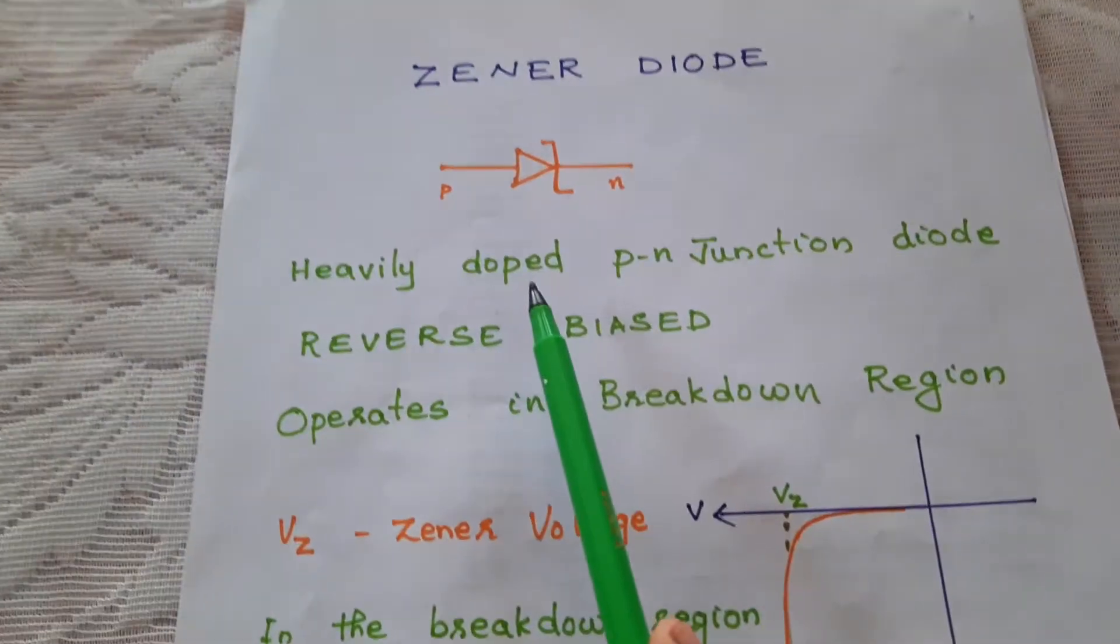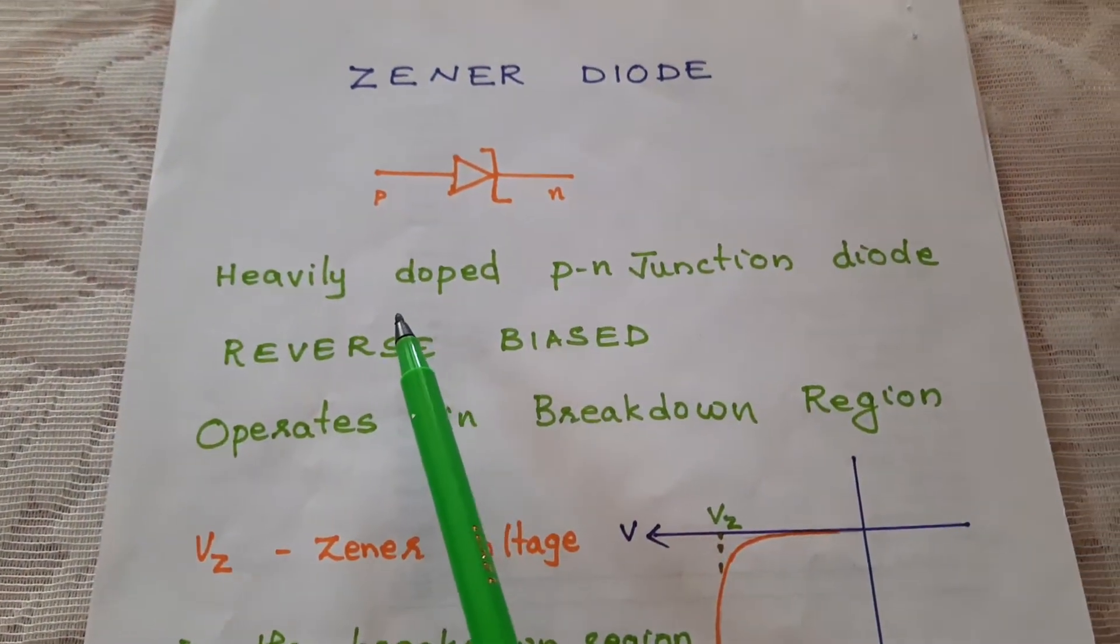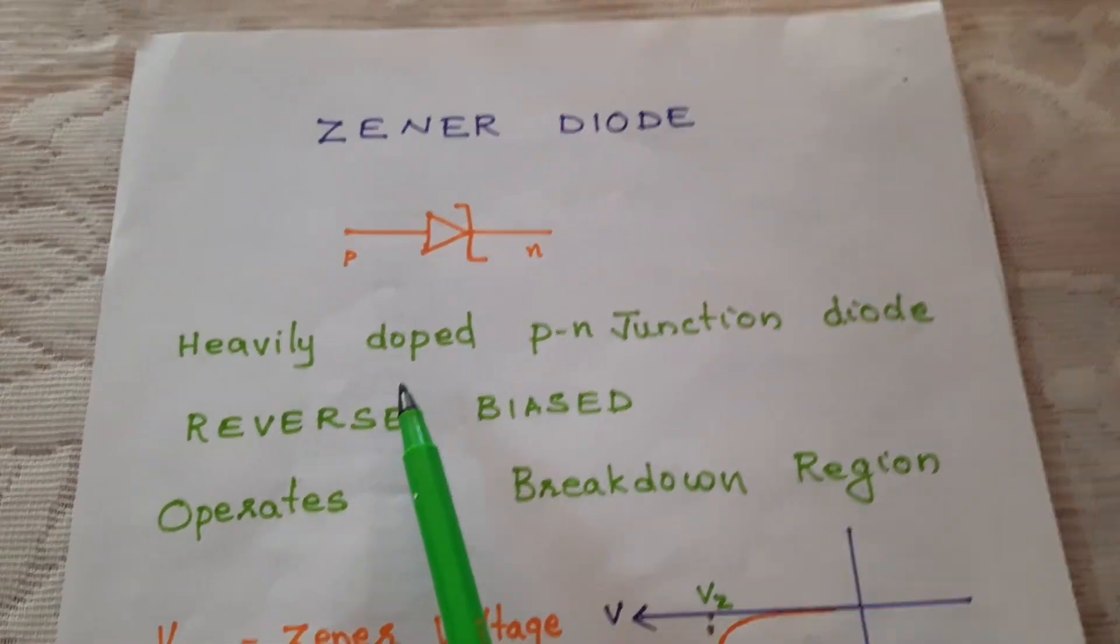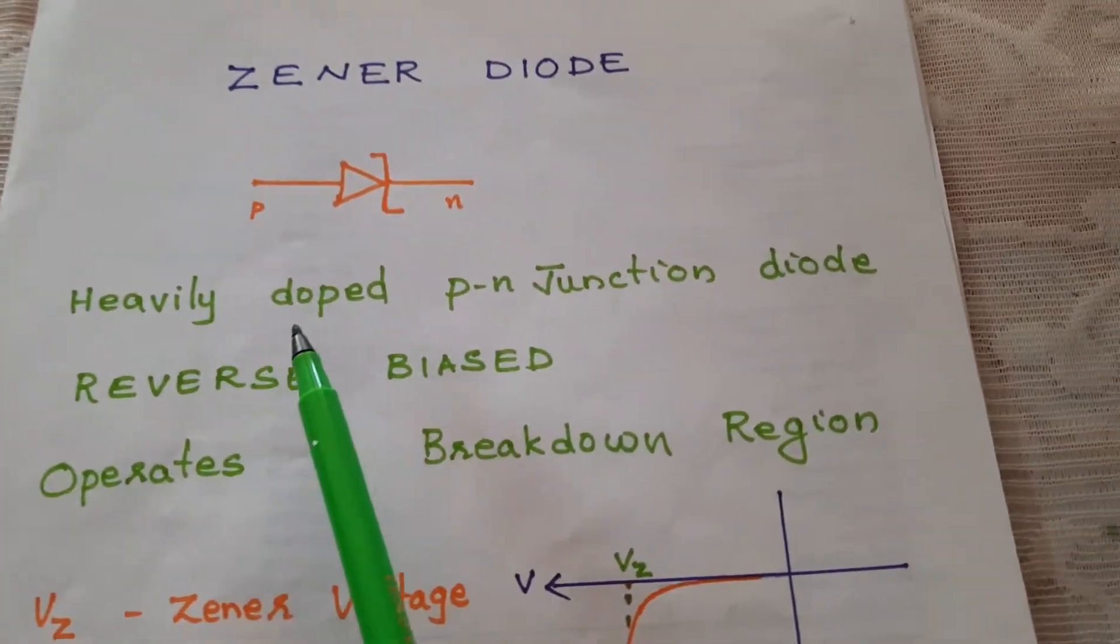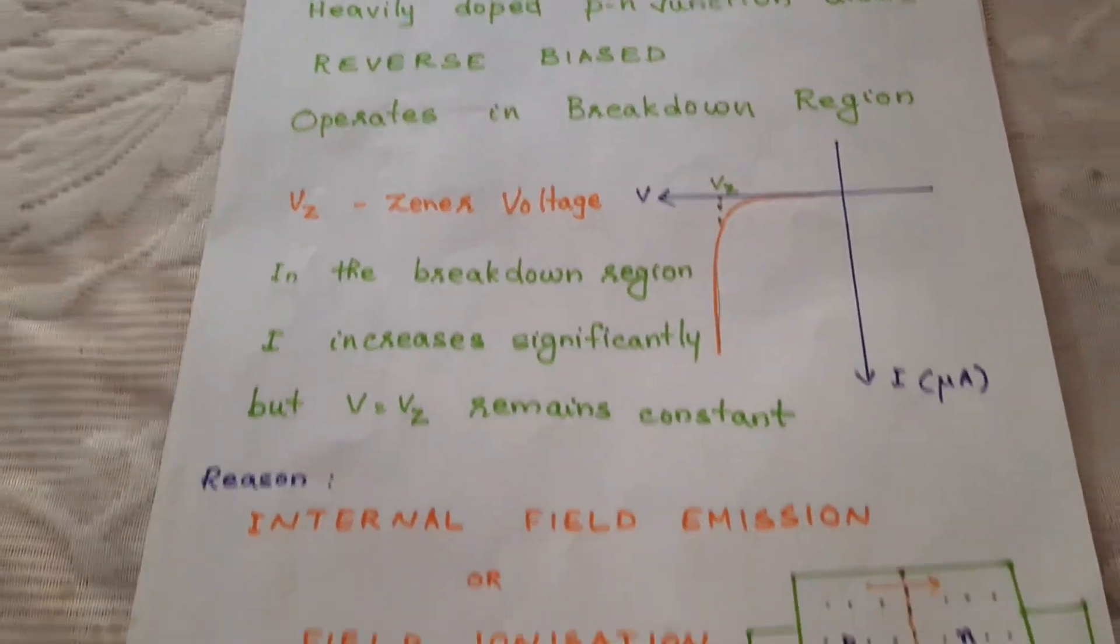Since it is heavily doped, the depletion region will be very thin. So the electric field near the junction is very high.